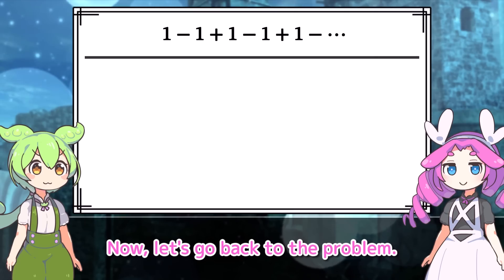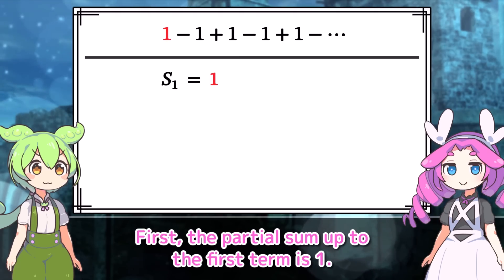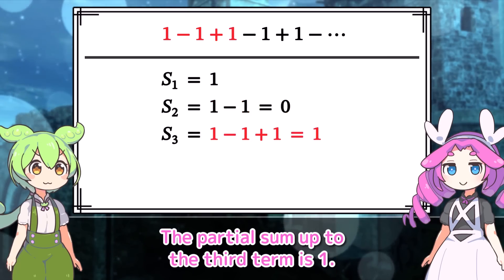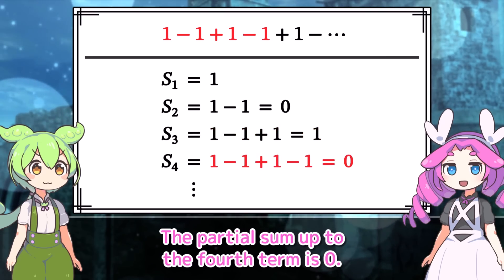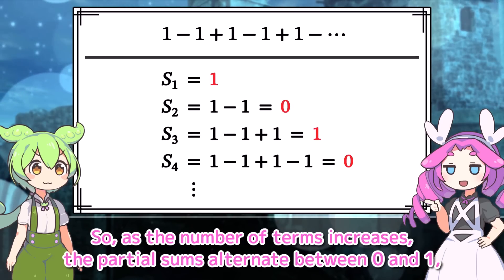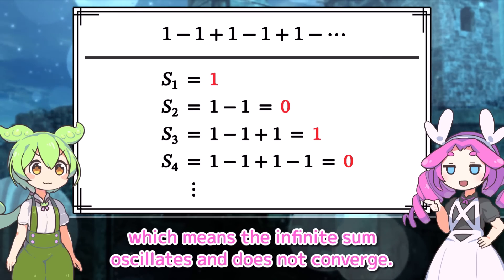Now let's go back to the problem. If we calculate the partial sums of this infinite sum: the partial sum up to the first term is 1, up to the second term is 0, up to the third term is 1, up to the fourth term is 0, and it continues in this pattern. So as the number of terms increases, the partial sums alternate between 0 and 1, which means the infinite sum oscillates and does not converge.